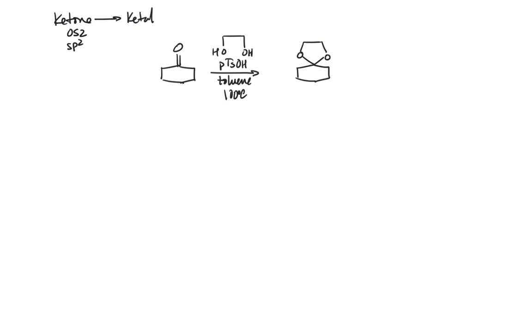This is a screencast on the acid-catalyzed ketolization of a ketone to a ketal with ethylene glycol using paratoluene sulfonic acid in toluene at 100 degrees. First things to point out here, the ketone starting material is at an oxidation state of 2 with an sp2 hybridized carbon.